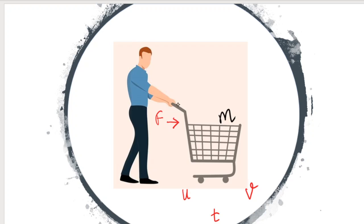You can relate this to a practical, easy example from daily life. When you go to a shopping mall, you push a trolley. Consider the mass of this trolley as m, and the initial velocity as u — assume it starts from rest. Then, you apply an unbalanced force, pushing the trolley so it moves and attains a final velocity v after a time interval t.